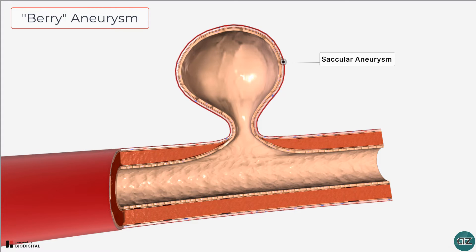An aneurysm is a dilatation or bulging of the wall of a blood vessel. This pathological dilatation weakens the vessel wall and it can rupture, leaking blood into the subarachnoid space.